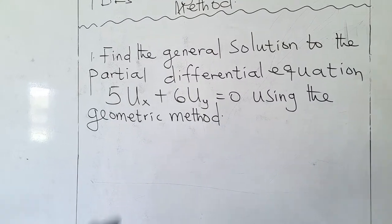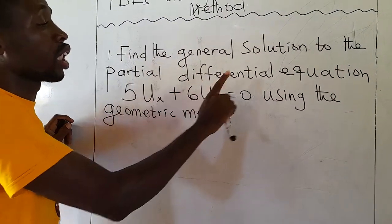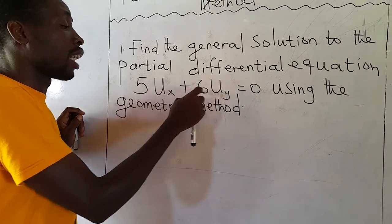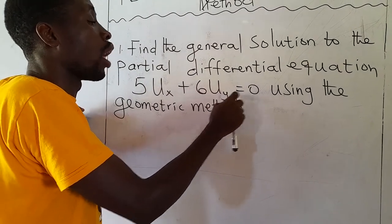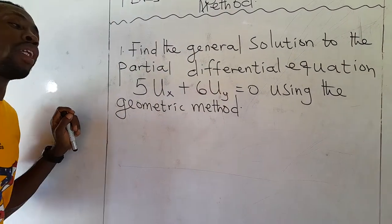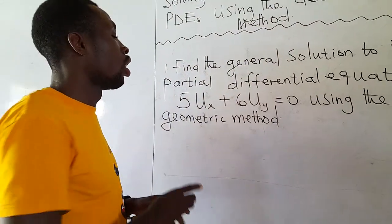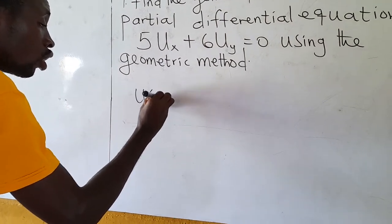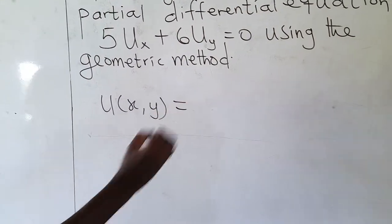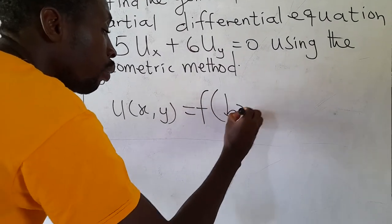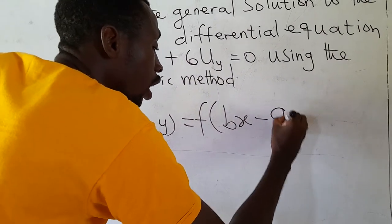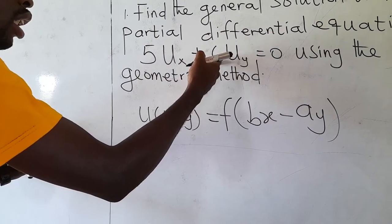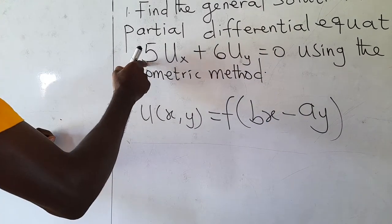Let's look at our first question. Find the general solution to the partial differential equation: 5 times the partial differentiation of U with respect to x, plus 6 times the partial differentiation of U with respect to y, equals 0, using the geometric method. The general solution is given as U(x, y) equal to F of (Bx minus Ay). Our B in this case is 6, and our A in this case is 5.